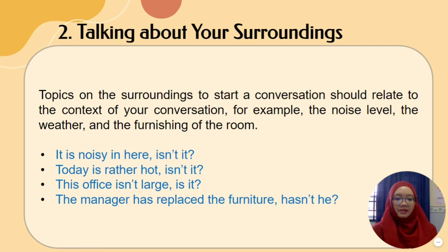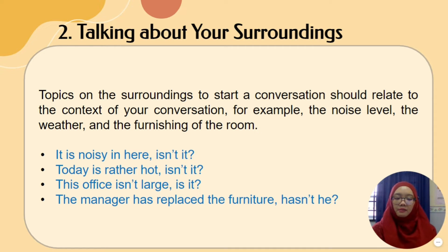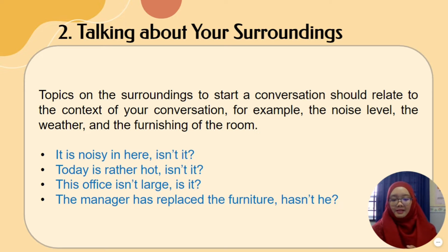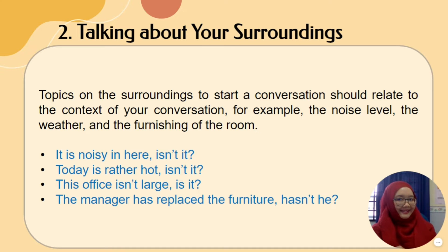Number two: talking about your surroundings. Topics about the surroundings to start a conversation should relate to the context of your conversation — why you approach the person in the first place. You can talk about the noise level, the weather, or the furnishing of the room. Some examples: 'It is noisy in here, isn't it?' 'Today is rather hot, isn't it?' 'This office isn't large, is it?' 'The manager has replaced the furniture, hasn't he?'